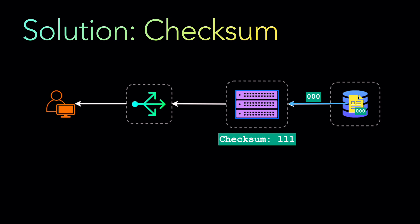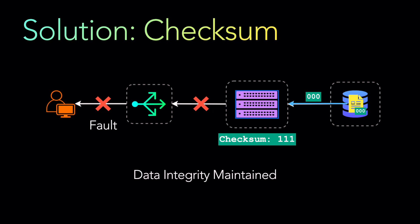When the user tries to read the data and the service reads from the database, the checksum on the data does not match what was calculated when the data was written — there is a mismatch. Since the data got corrupted, the service can determine and decide to fail the request instead of returning wrong data. This way we have ensured that data integrity is maintained. The service stores the checksum with the data so that at runtime it can differentiate whether the data got corrupted, and then decide whether to serve the data or protect data integrity.